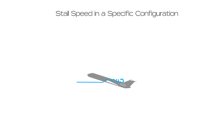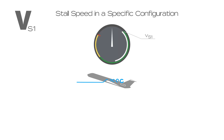Stall speed, or minimum steady flight speed in a specific configuration, is represented by VS1. This speed is usually regarded as the clean stall speed, meaning that gear and flaps are up. On the airspeed indicator, the lower limit of the green arc usually indicates this speed.